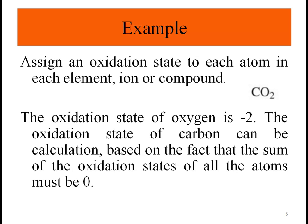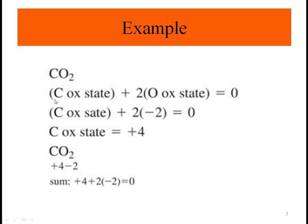So in CO2, we have minus four for the oxygen part, meaning carbon must be plus four to make the total zero. That is: plus four plus two times minus two equals zero.